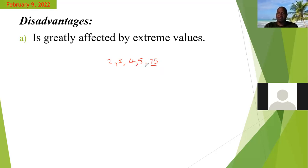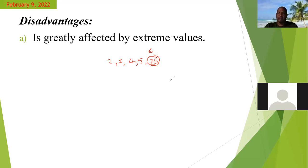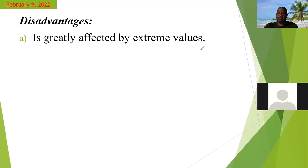If you had a closer value to two, three, four, and five — like six instead of 75 — that would give you a true reflection of what the average is. So an extreme value would actually distort what the mean is and would not give you a true picture. That is a disadvantage of using the mean.